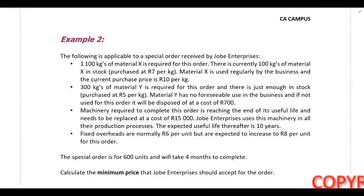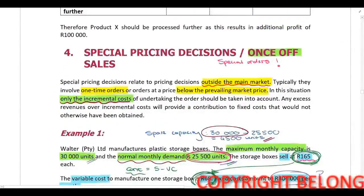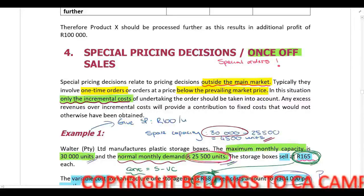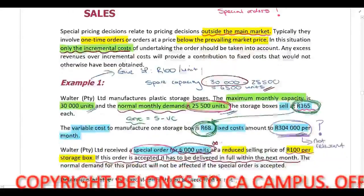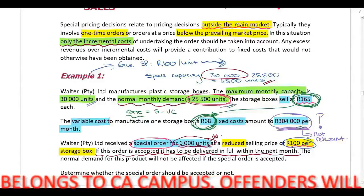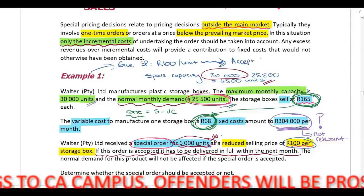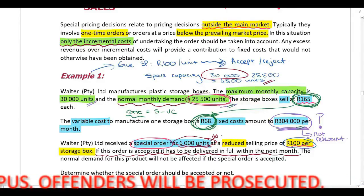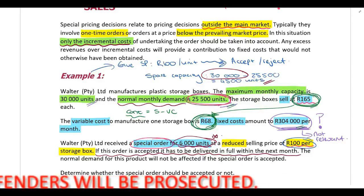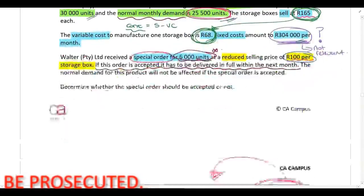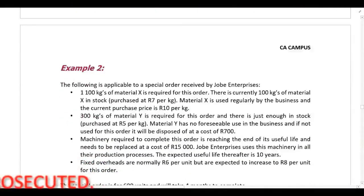Let's highlight the differences between these two examples. In Example 1, I give you the selling price of 100 Rand per unit — we received a special order for 6,000 units at a reduced selling price of 100 Rand per unit, and you have to tell me whether to accept or reject. Because it resulted in additional profit, I accept. If it resulted in a loss, I would have rejected the special order.